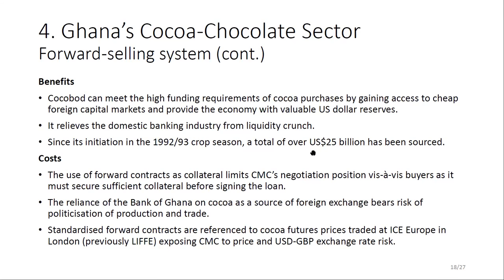Before Cocoa Board can raise these offshore loans, it needs to use forward selling contracts as collateral. As of June 2021, CMC would be selling against the 2021–2022 crop, potentially selling crop of June 2022. Since its inception in 1992–93, Cocoa Board has raised in excess of 25 billion dollars. The cost of this financing rarely exceeds 3%, compared to around 13% if it were to borrow locally. However, this limits CMC's negotiating position, as highly financialized grinders and hedge funds can forecast when CMC will be in the market and how much it has sold.